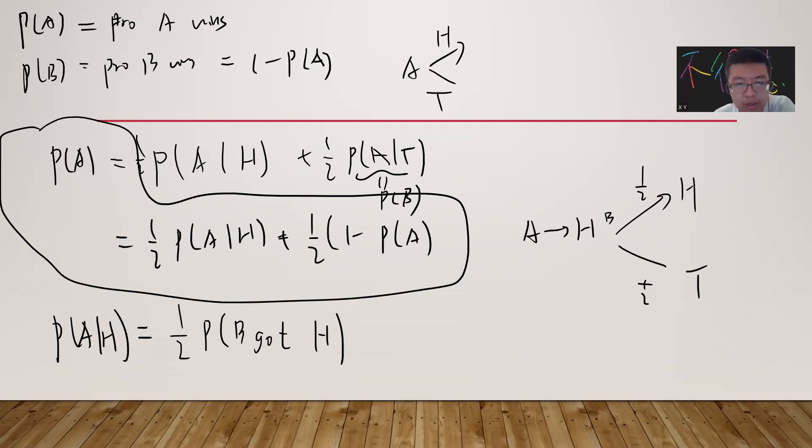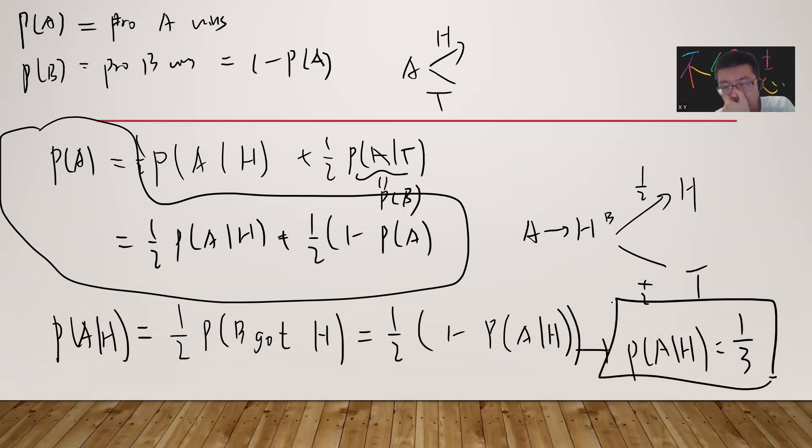This is half of one minus P(A|H). So P(A|H) will be one divided by three.